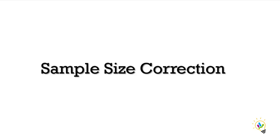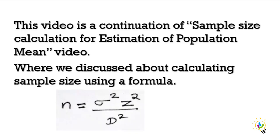In this video we will discuss sample size correction. This video is a continuation of the sample size calculation for estimation of population mean video — the link is in the description. We have discussed calculating sample size using the formula: n = sigma squared times z squared divided by d squared.